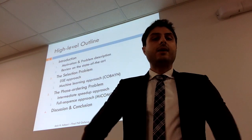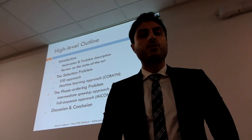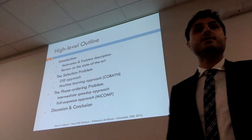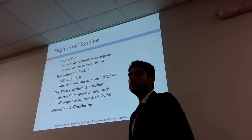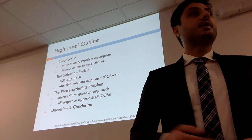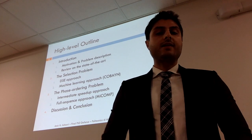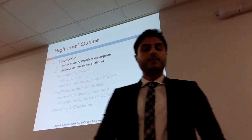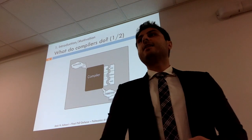This is the high-level outline of my dissertation. First, I'll introduce the motivation and description of the problem, and I'll have a quick review of the state of the art. Then I'll jump to the major problems of compiler optimization, which are called the selection problem and the phase ordering problem. At the end, we'll have a quick discussion and conclusion.